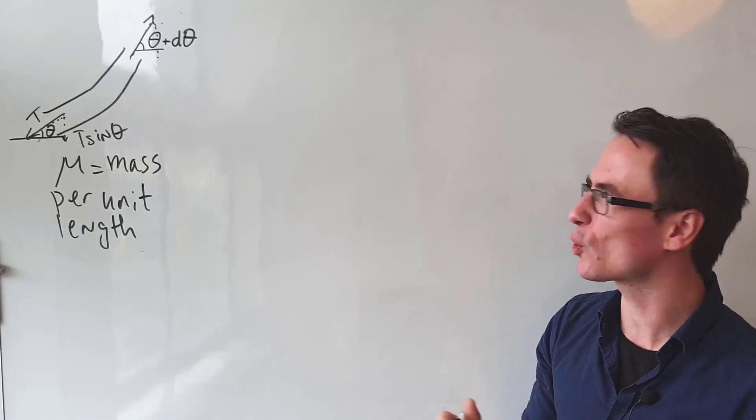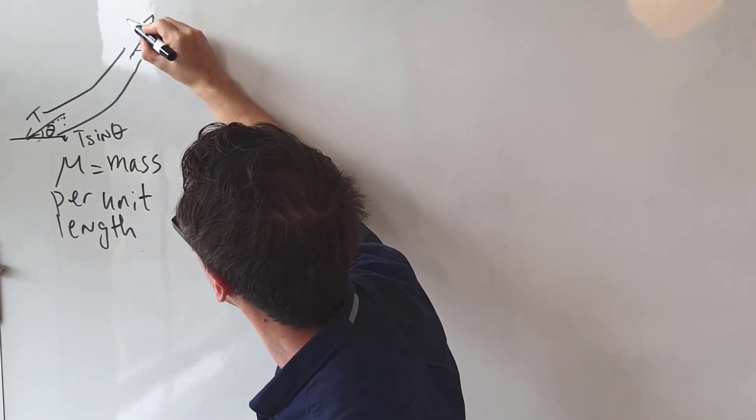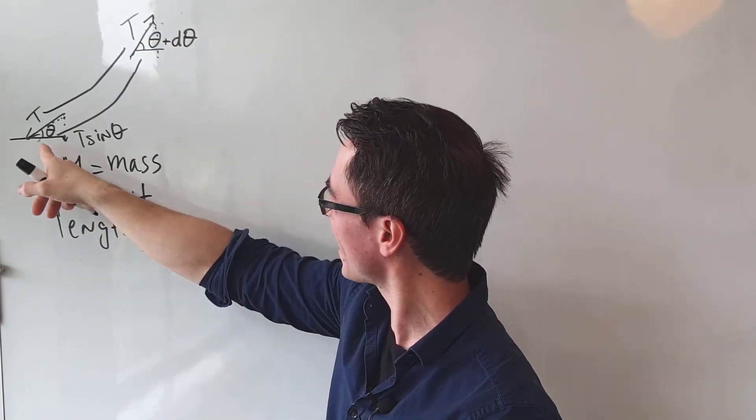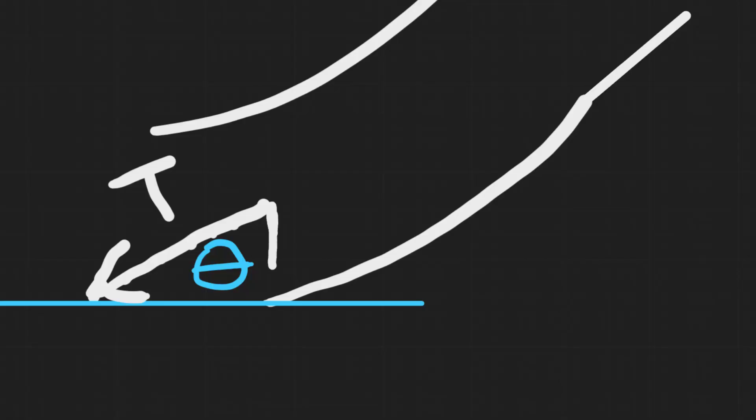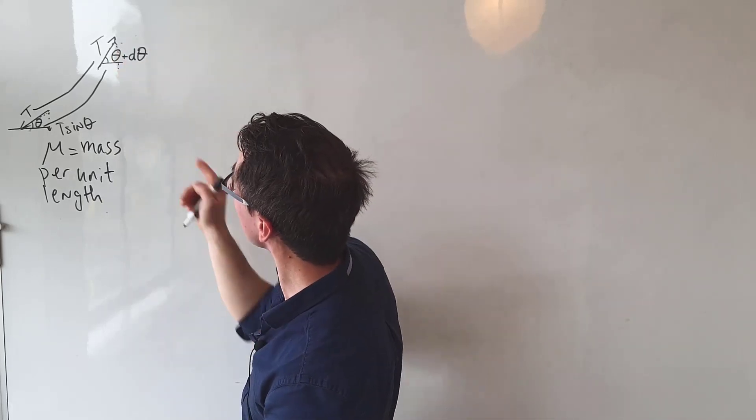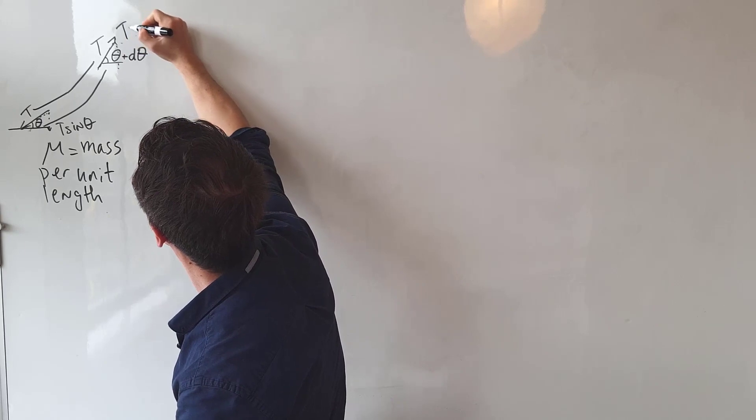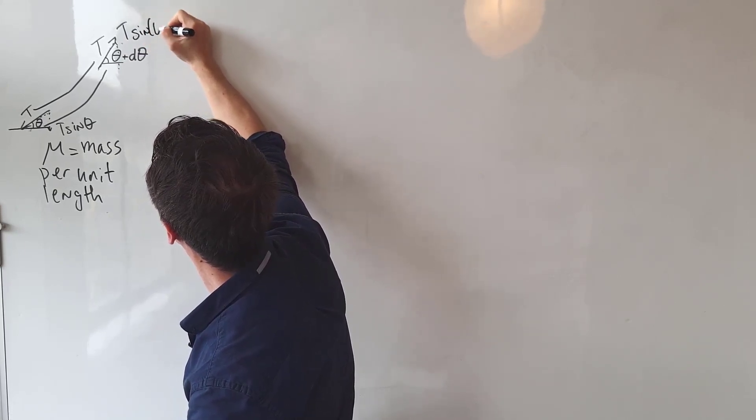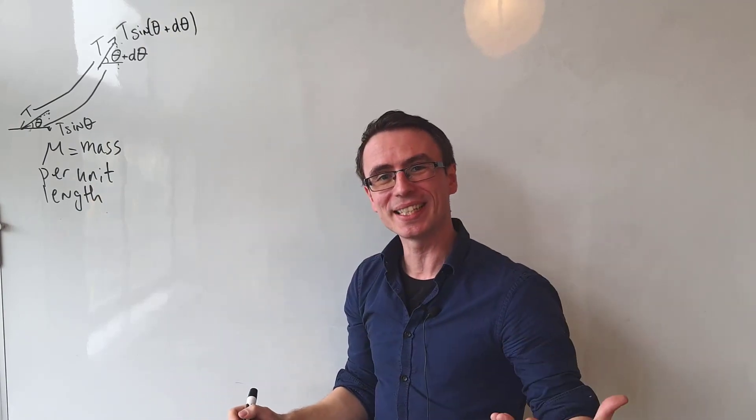What forces are acting on this string? If the segment is sufficiently small enough, the tension is going to be the same on this side and on this side. The component of the tension which is acting downwards is just going to be T sin theta. However, up here the vertical component of the tension will be equal to T sin of theta plus a small increase in angle d theta.